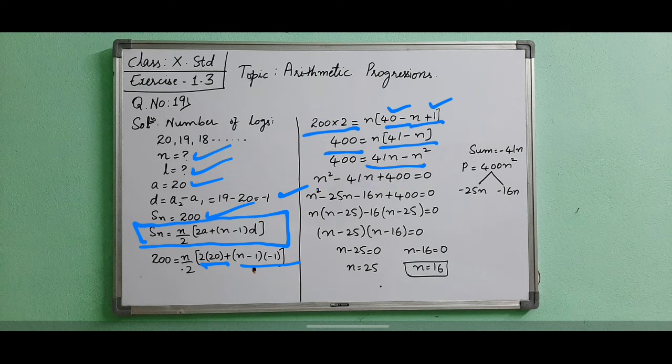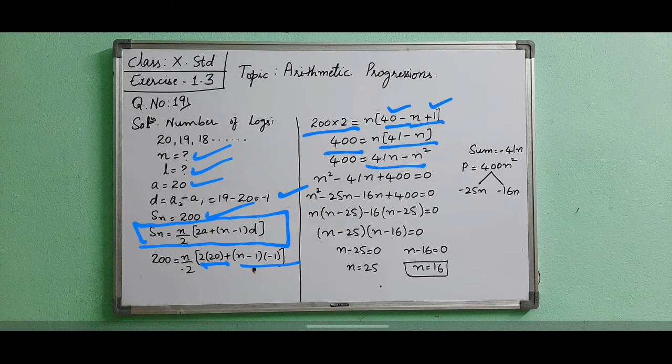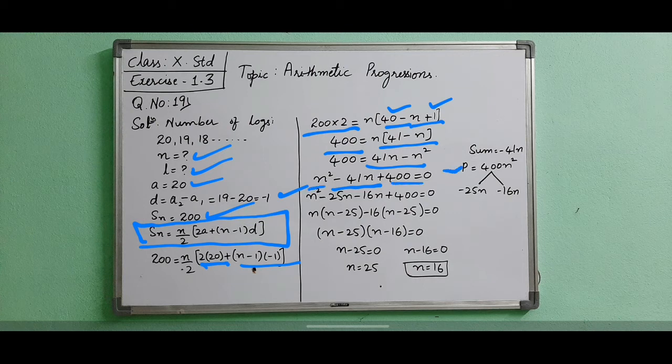When we have a quadratic equation, we can find its root by factorizing using sum and product. The sum is minus 41n and the product is the first and last. 400 into n square is 400 n square. At the place of minus 41n, we are taking minus 25n minus 16n.